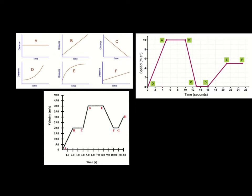From A to B, unlike the distance-time graph where a horizontal line meant standing still, on a speed-time graph a horizontal line means moving at constant velocity. You can see they're running at 10 metres per second from about 4 to 10 seconds. When the gradient goes down, we have deceleration — the person is slowing down until they reach a speed of 0. At 0 metres per second with a horizontal line, they are standing still, from about 13 to 16 seconds.